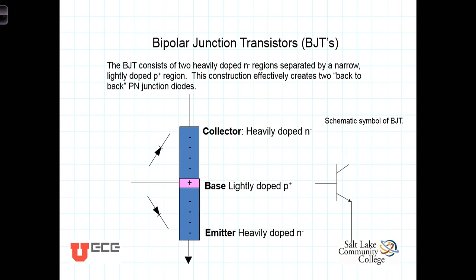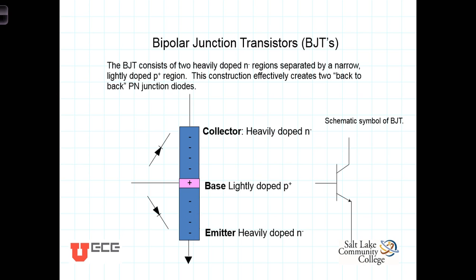First, the bipolar junction transistor. It's referred to as bipolar because it has two separate types of doped areas — we've talked about doping semiconductors when discussing diodes. The BJT consists of two areas of one type of doping with a smaller, more lightly doped area in between. This is an NPN transistor: a heavily doped larger N area, a very lightly doped narrow P area, and then again a heavily doped N area. The three terminals are called the collector, the base in the middle, and the emitter.